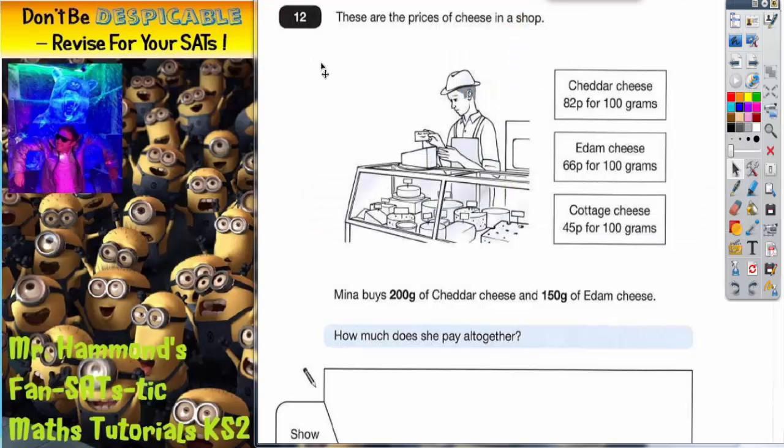Question 12 is all about cheese. Cheddar cheese is 82p for 100 grams, edam cheese is 66p for 100 grams, cottage cheese is 45p for 100 grams - all the prices are for 100 grams. However, Lena goes into the shop and she actually buys 200 grams of cheddar cheese.